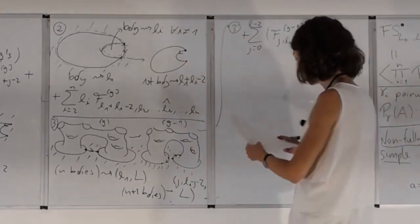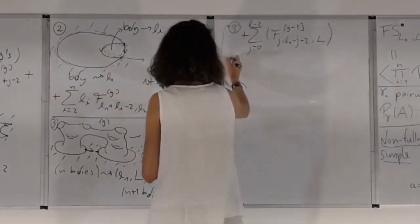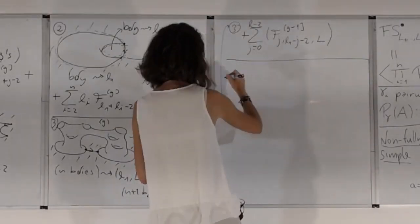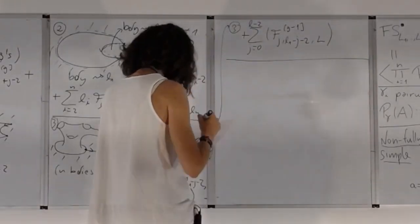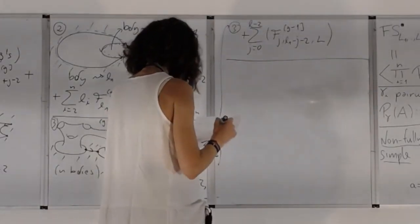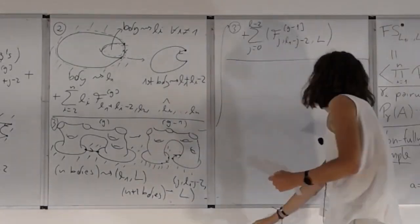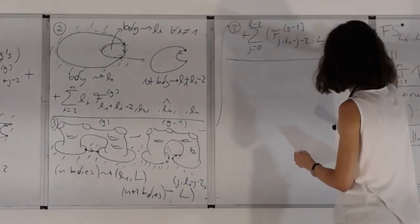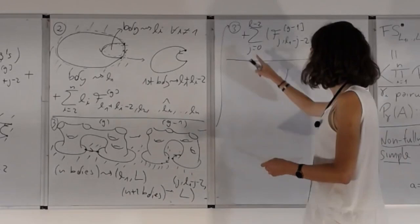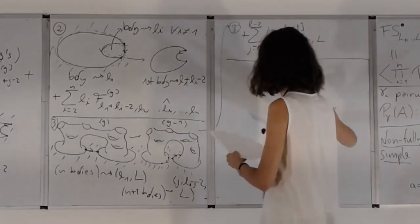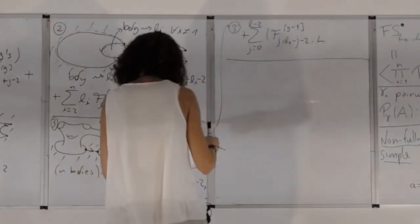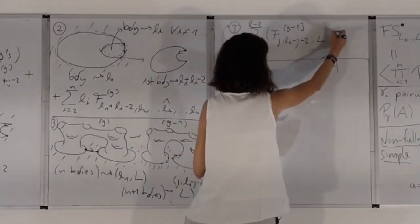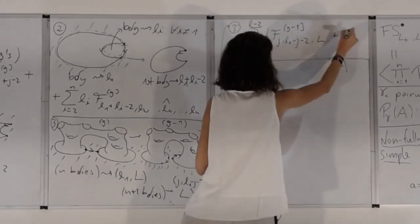This disconnected case gives a product of generating series, as in the topological recursion formula. We sum over all possible J and all partitions I of the remaining boundaries. This completes the four cases of the Tad recursion.